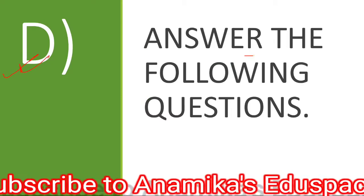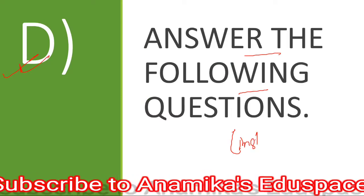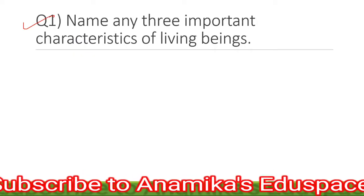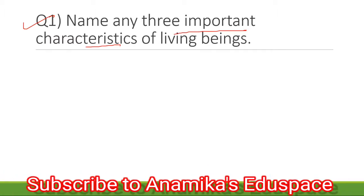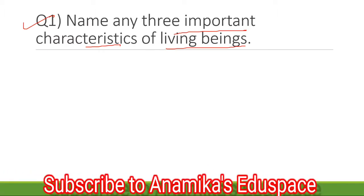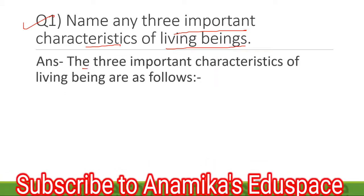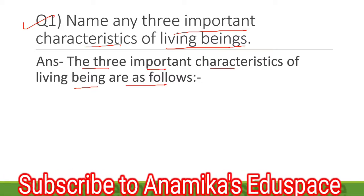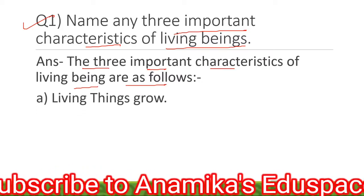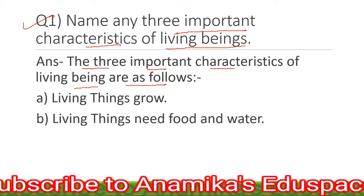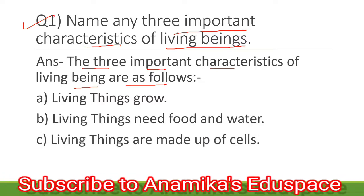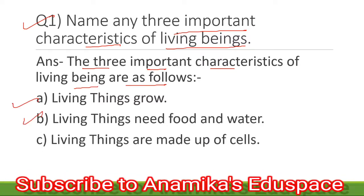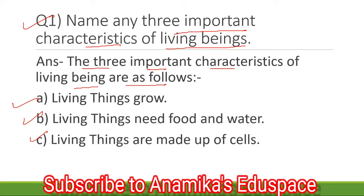Question number D: Answer the following questions in short. First question: Name any three important characteristics of living beings. The answer goes as the three important characteristics of living beings are as follows. Living things grow. Living things need food and water. Living things are made up of cells. So these are the three important characteristics of living beings.